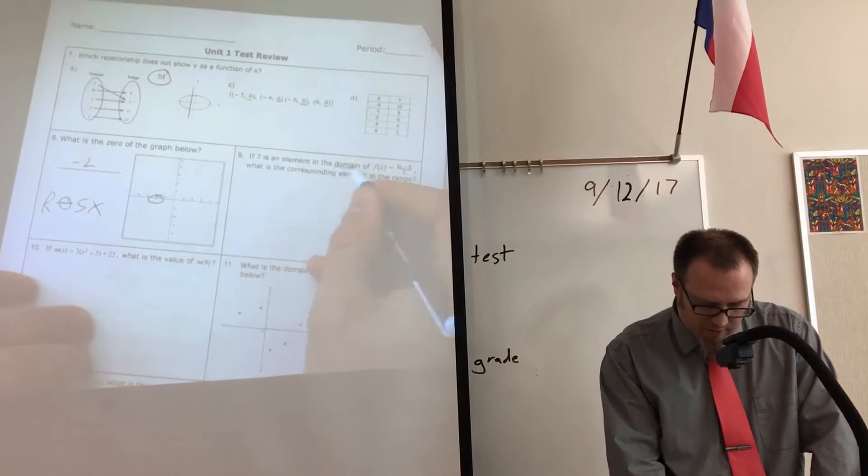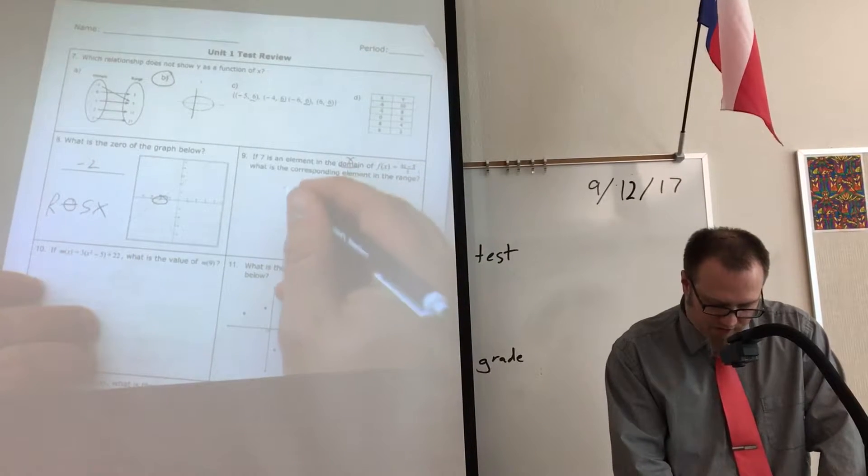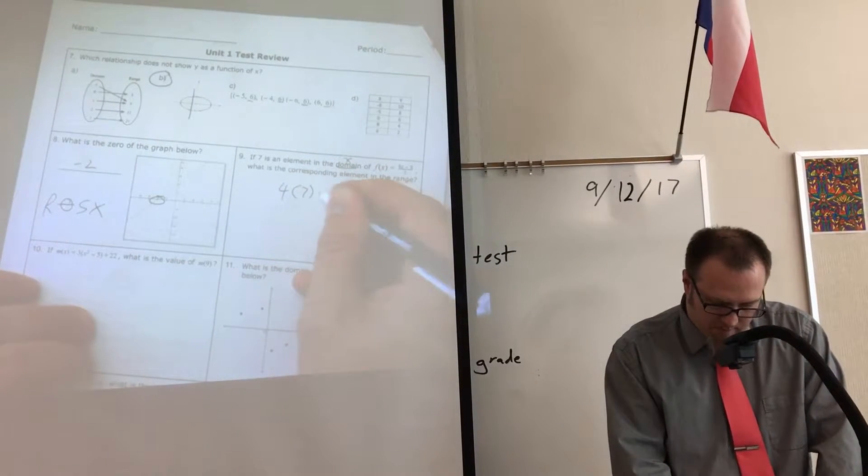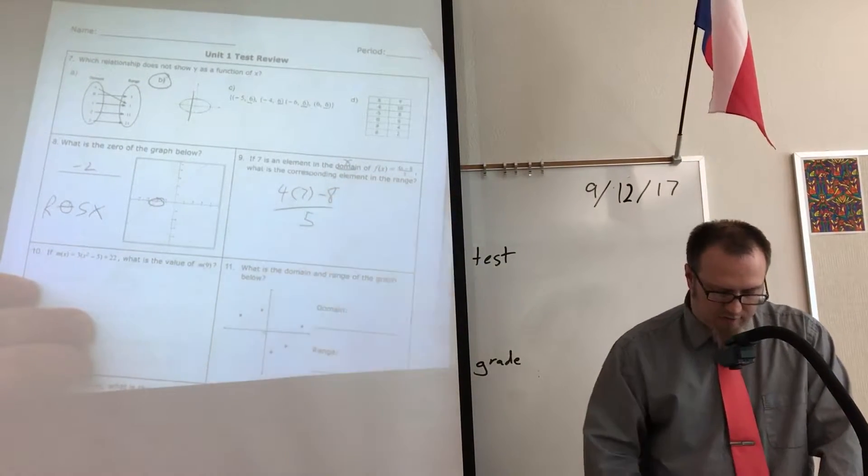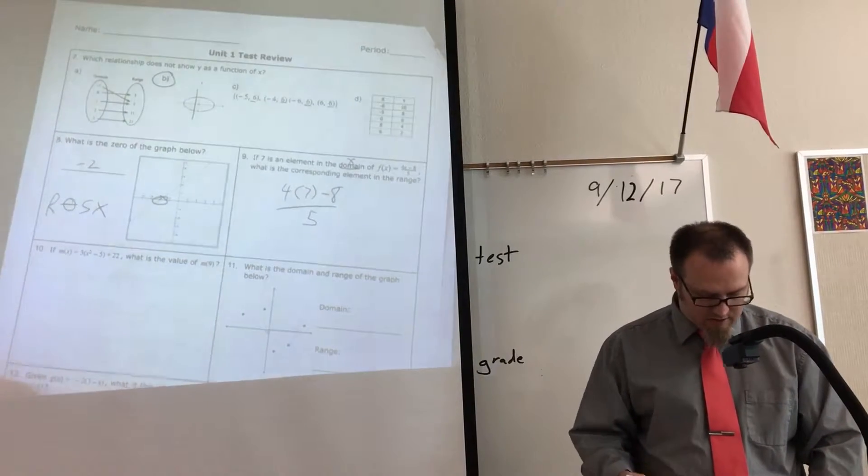If seven is the number of the domain, domain is X, put seven in for X. Four times seven minus eight over five. Type it into the calculator, you should get the right answer.